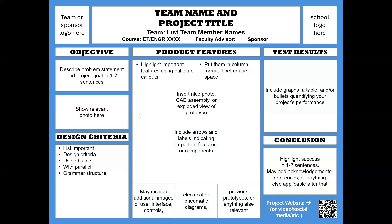Moving on to product features: this might be a prototype or a more developed product. If it's your first build, it's definitely a prototype — label it as prototype features to set expectations. If you've been working on it for an entire semester or more, call it a product. Highlight important features using bullets or callouts, and start with a big, nice photo, a CAD assembly, or an exploded view — whatever gives a good big-picture view of your prototype.